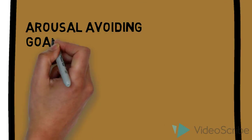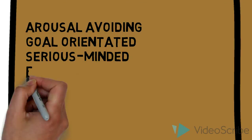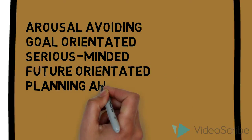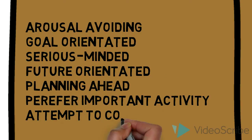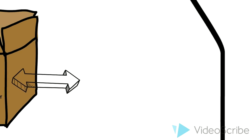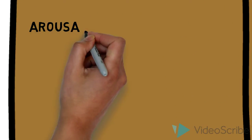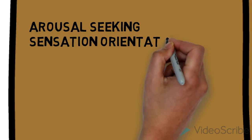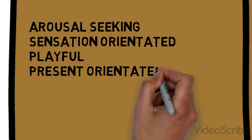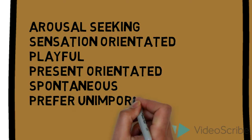Moving on to the four somatic states. Telic is arousal-avoiding, goal-orientated, and serious-minded, with an orientation to the future, completing activities and planning ahead. Its pair, paratelic, is arousal-seeking, sensation-orientated and playful. It involves being orientated with the present, wanting to prolong activity, and is spontaneous.